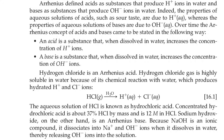Arrhenius defined acids as substances that produce protons or hydrogen ions in water and bases as substances that produce hydroxide ions in water. Indeed, the properties of the aqueous solutions of acids, such as sour taste, are due to the hydrogen ions, whereas the properties of aqueous solutions of bases are due to hydroxide.